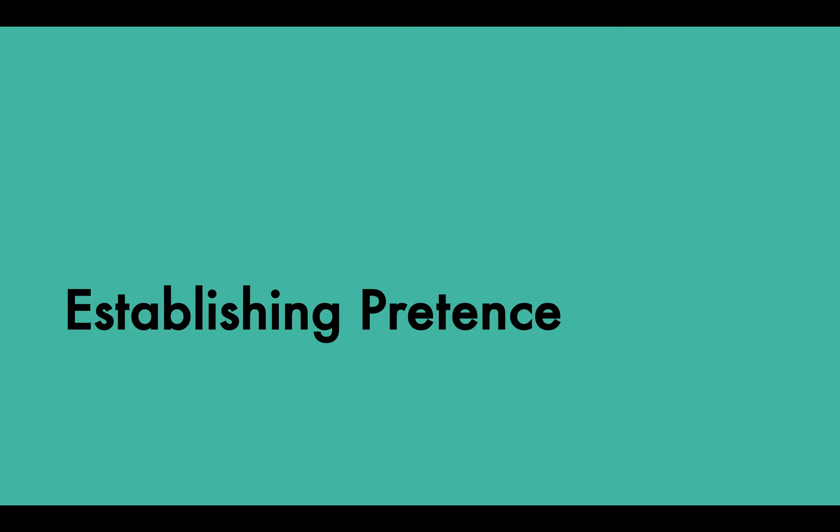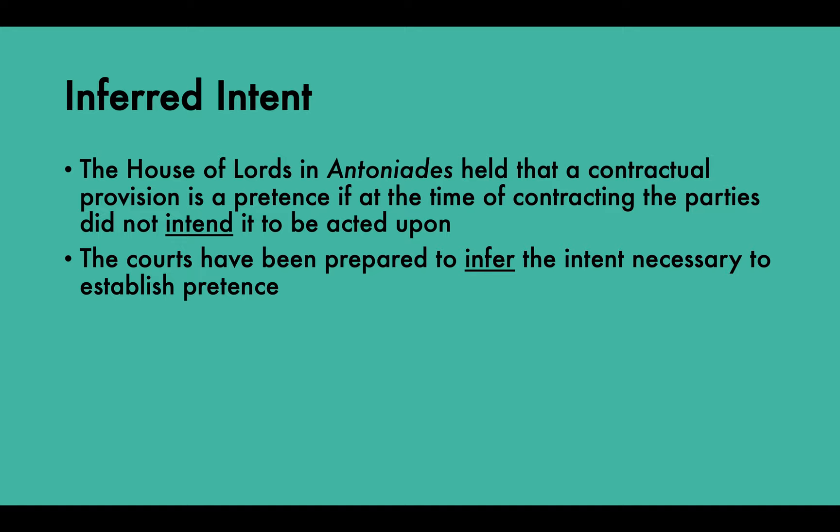On establishing pretence through inferred intent: the House of Lords in Antoniades held that a contractual provision is a pretence if at the time of contracting the parties did not intend it to be acted upon. Although this references the parties, it's really about the key intent of the landowner — that is the real intent the court is concerned about, and it's specifically about intent at the time the contractual agreement was drawn up. The court is prepared to infer the intent necessary to establish pretence.